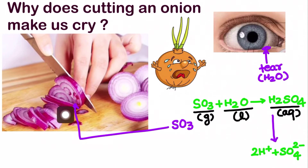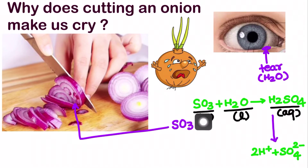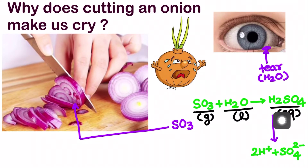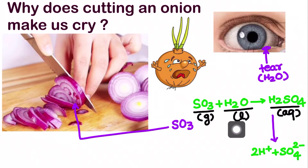So basically, the onion has minute pockets of sulfur trioxide in it. When we cut or peel it off, this SO3 gas comes out and comes in contact with the water present in the tear, and it undergoes the following reaction — formation of a strong acid, sulfuric acid. This sulfuric acid further dissociates into 2H⁺ and SO4²⁻. The eye stings due to direct contact with this sulfuric acid.